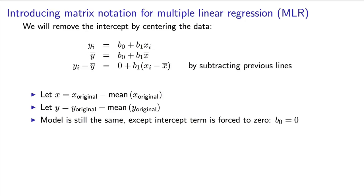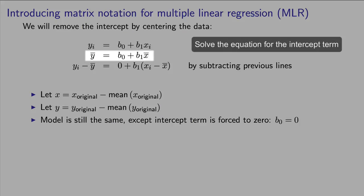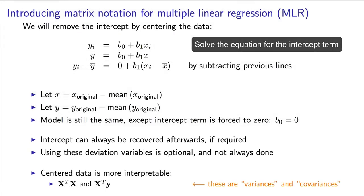Recall that centering is a process that simply shifts the variable, but maintains all of the relationships that it has. When we build our model with these centered x and y variables, or as we sometimes say, deviation variables, we now have a model where the intercept is zero and does not need to be estimated. Notice from the second line over here, we can always recover that intercept value back if we really are interested in it.